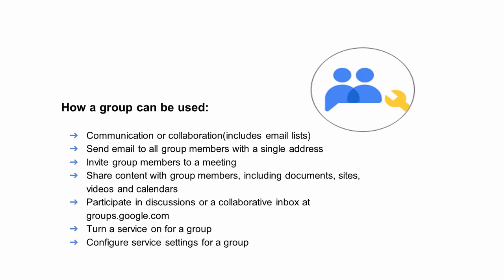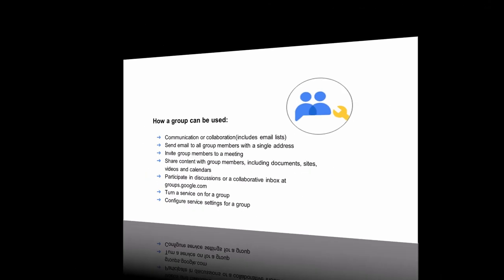A group can be used for communication or collaboration including email lists — send email to all group members with a single address, invite group members to a meeting, share content with group members including documents, sites, videos and calendars, participate in discussions or a collaborative inbox at groups.google.com, turn a service on for a group, and configure service settings for a group.